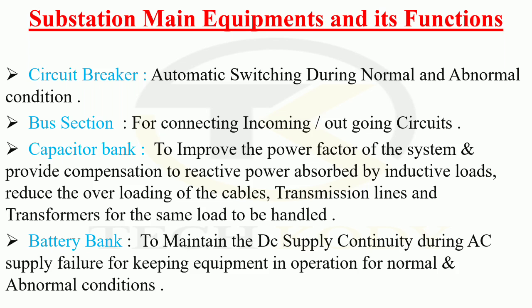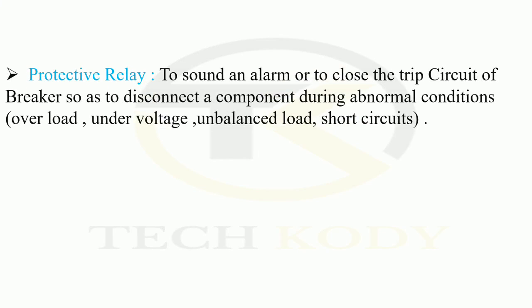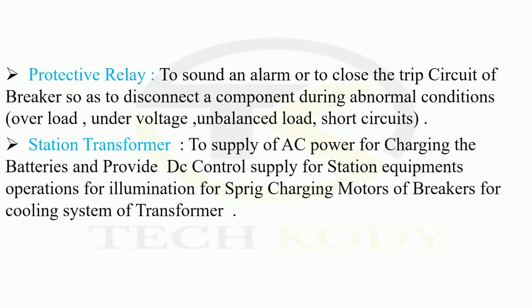Battery banks: to maintain the DC supply continually during AC supply failure, for keeping the equipment in operation under normal and abnormal conditions. Protection relay: to sound an alarm or close the trip coil of the breaker so as to disconnect a component during abnormal conditions — that is overload, under voltage, unbalanced load and short circuits. Station transformers: to supply AC power for the charging of the batteries and provide a DC control supply for the station equipment, operation and illumination, spring charging motors of the breakers, and cooling system of the transformers.